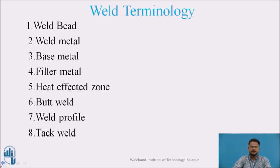Butt weld is the weld produced by keeping two base metals side by side. Weld profile is the shape of the weld bead produced; it is used to specify the quality of the weld bead and depth of weld. Tack welding is the temporary weld joint made on the weld line to keep the base metals intact. Generally, tack welds are made at two or more points depending upon the weld joint length.